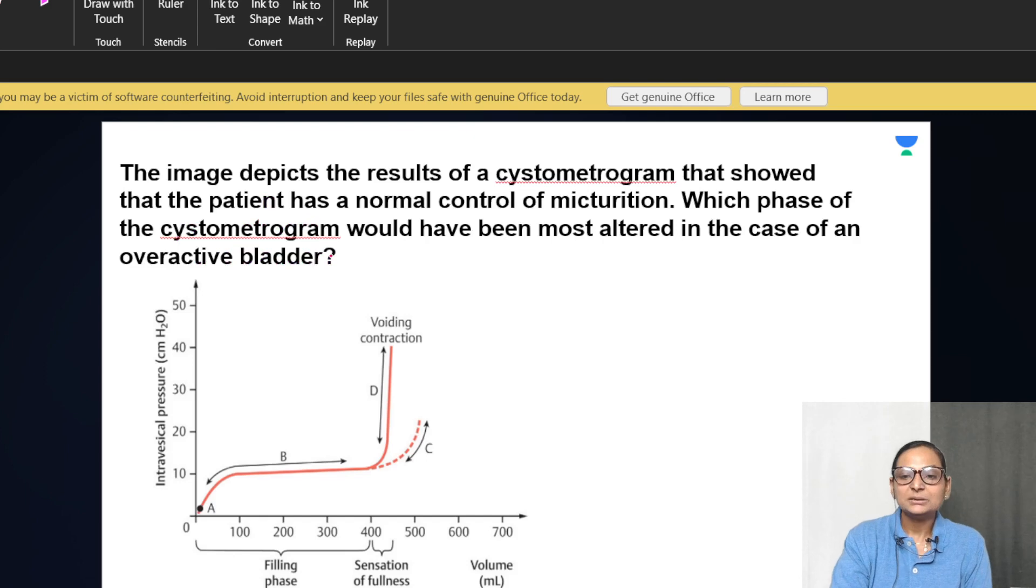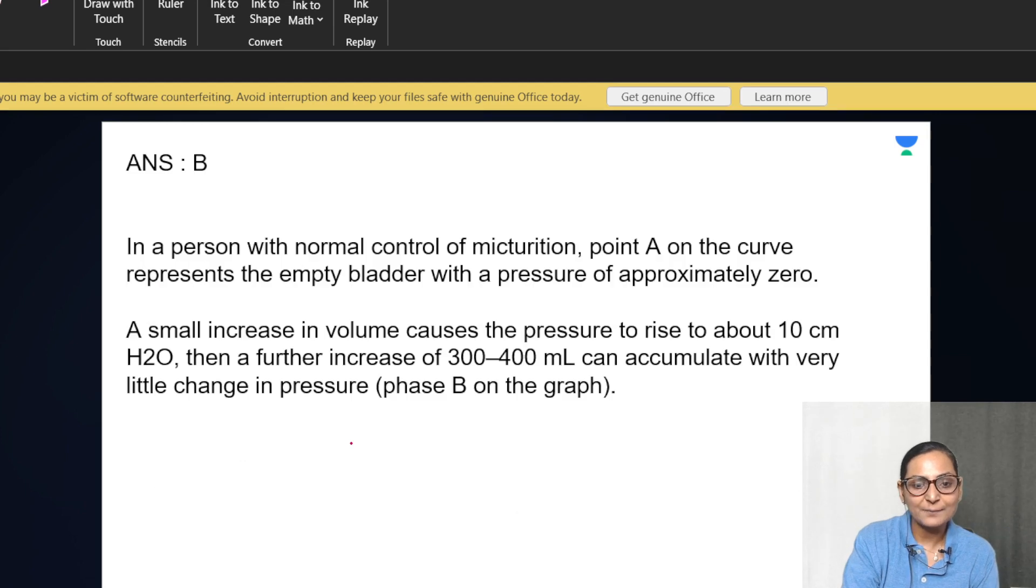The question is about this image-based cystometrogram that shows the patient had normal control of micturition. Which phase of the cystometrogram would have been mostly altered in the case of an overactive bladder? Options would be A, B, C, or D. Which phase would be altered if the patient has got an overactive bladder?